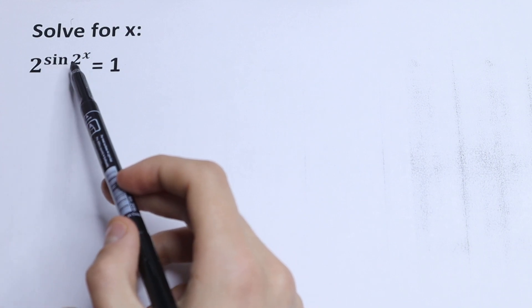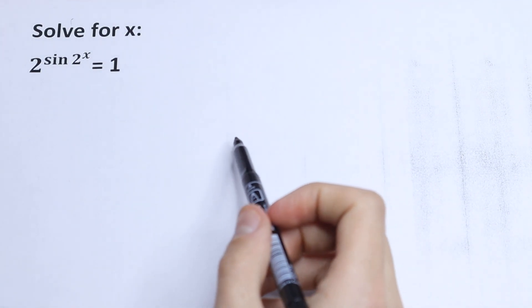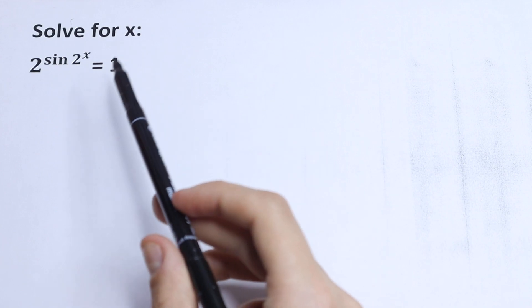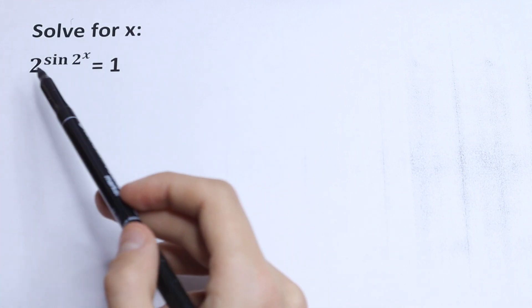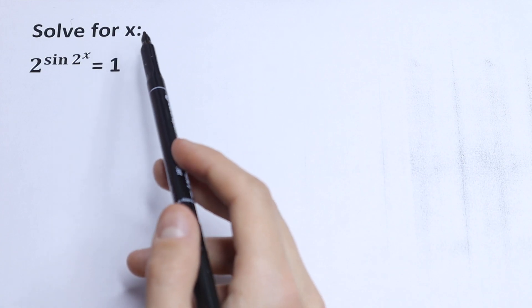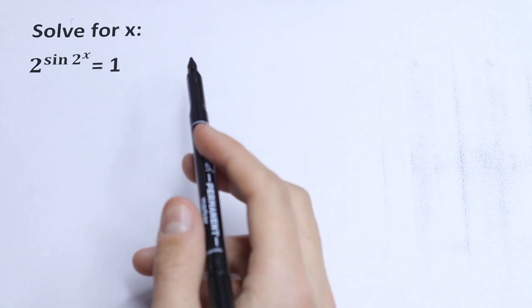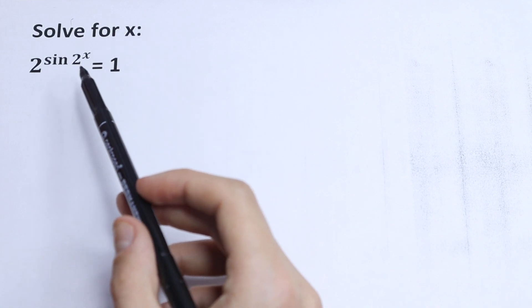We have 2 to the power sin 2 to the power x equal to 1. How can you solve this? On the first side, this equation is really hard because we have exponential function, we have sin right here, and of course the trigonometrical equation is really hard. And how can you solve this?